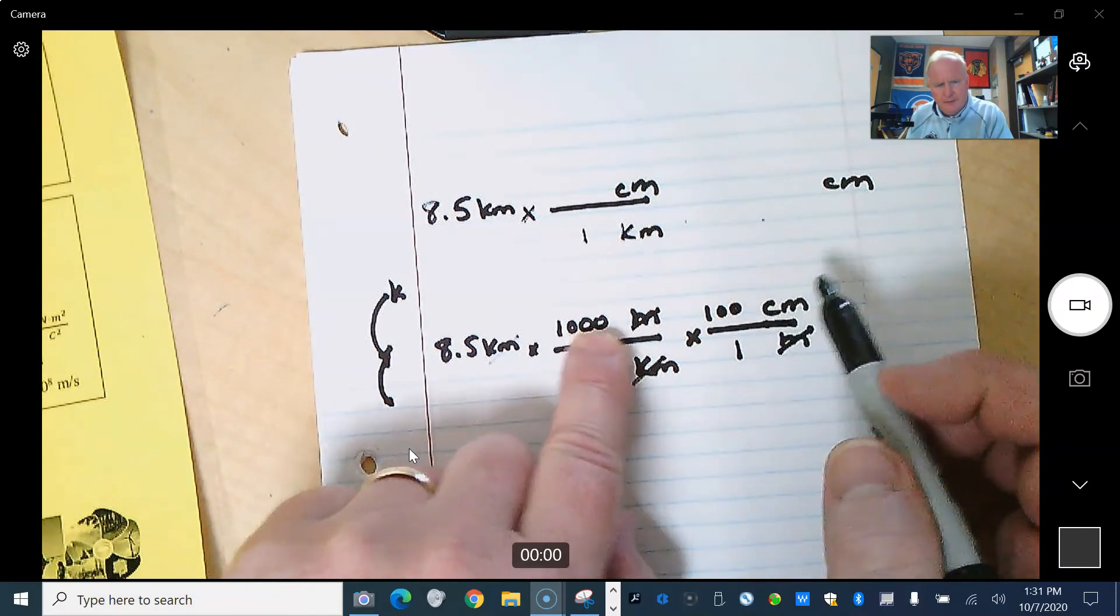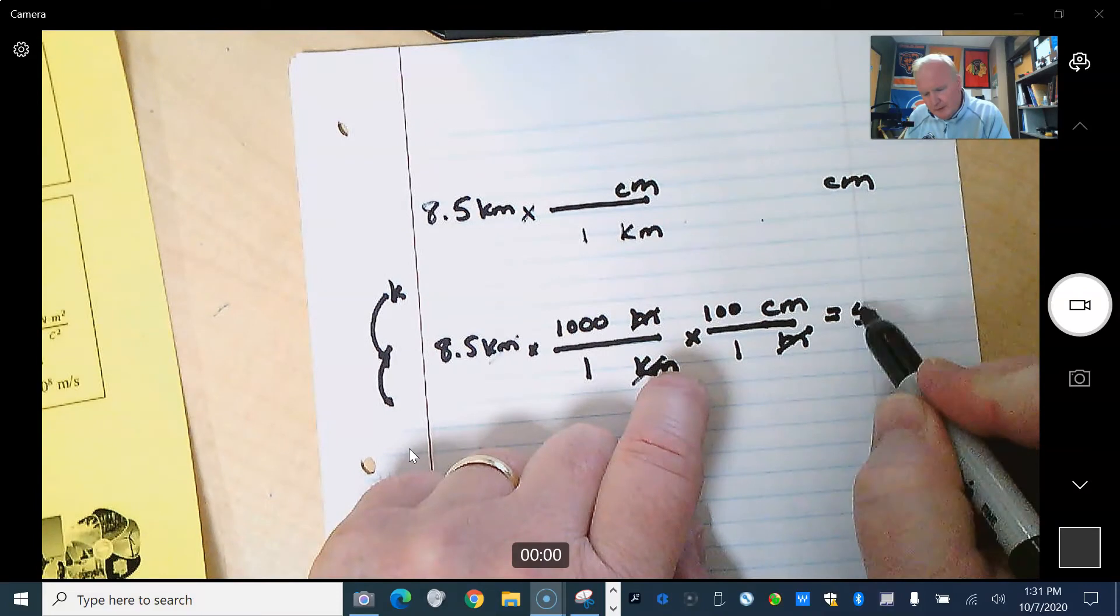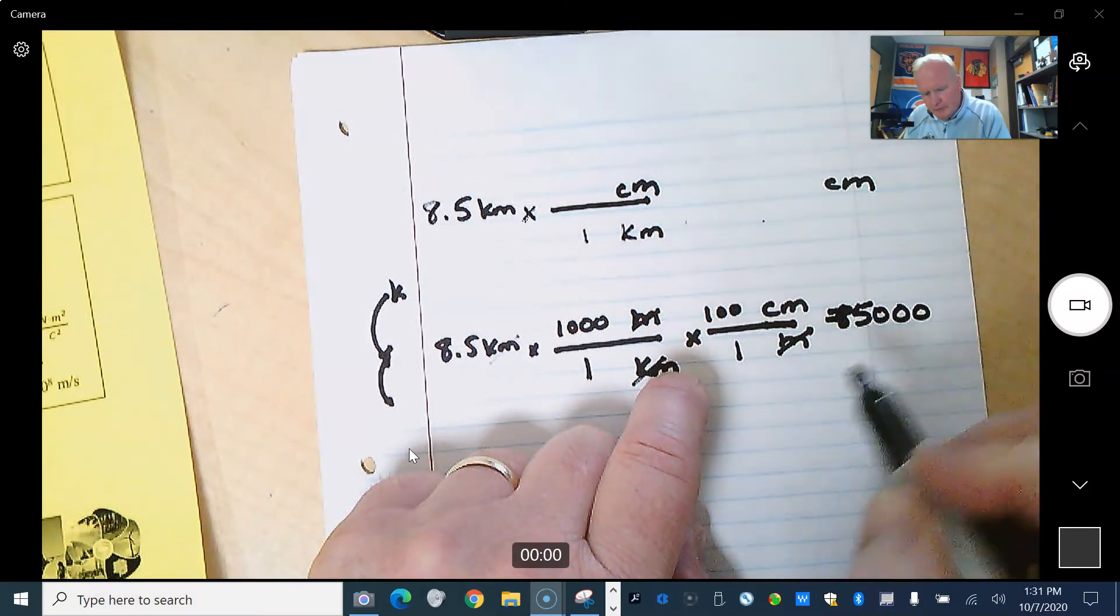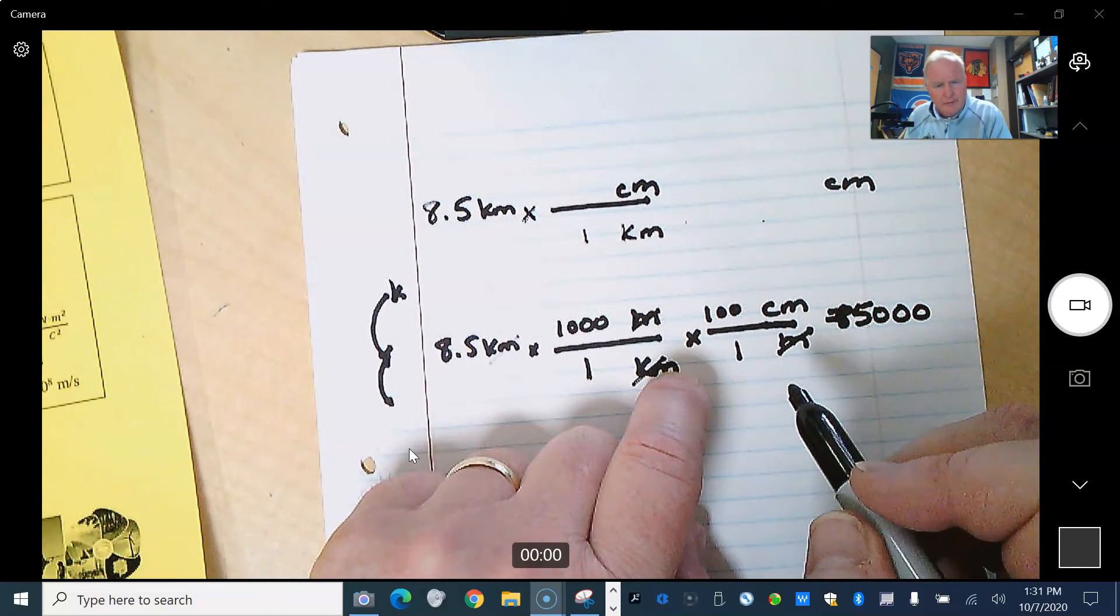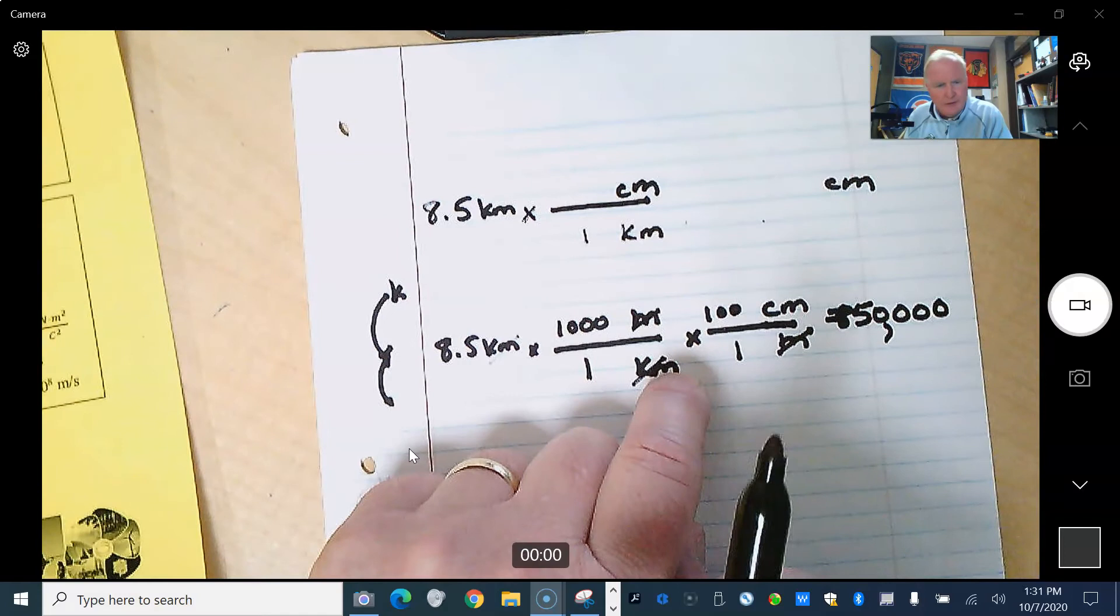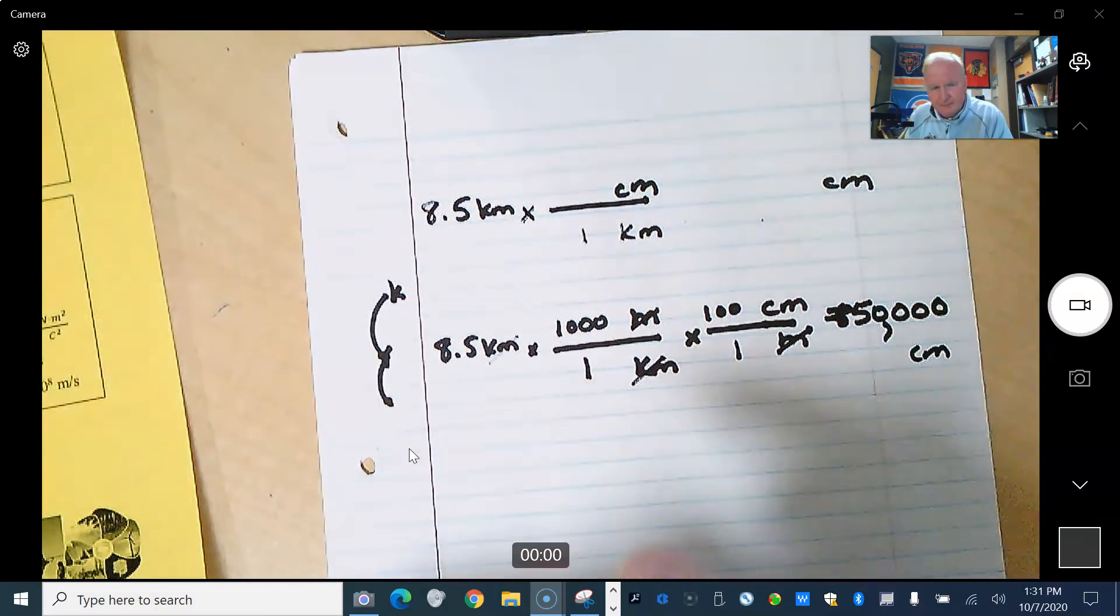8.5 times 1,000 times 100. And that's going to be 8.5, 1, 2, 3, 1, 2, 3, 4, and we'll have to add another one. So I think it's 850,000 centimeters is our answer.